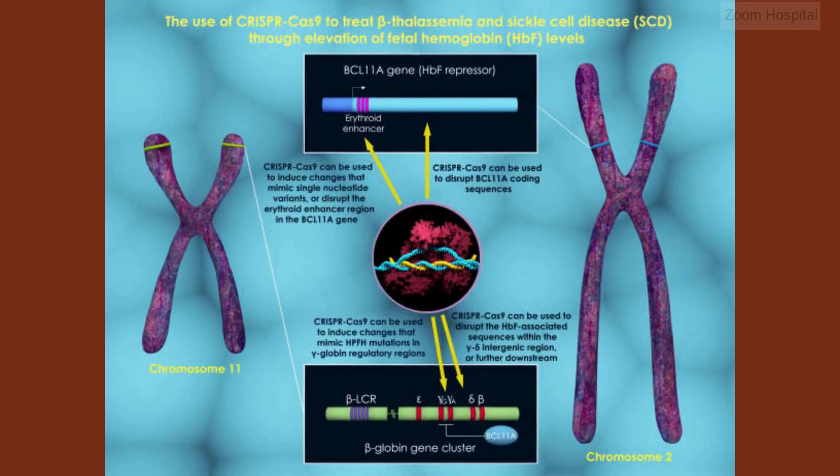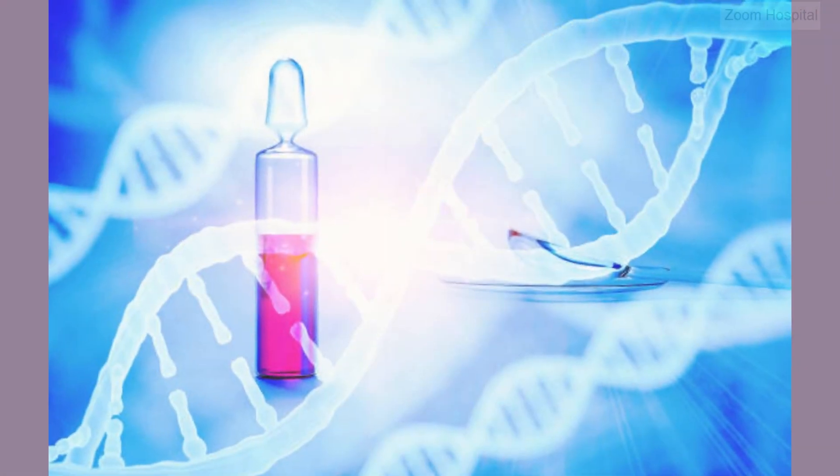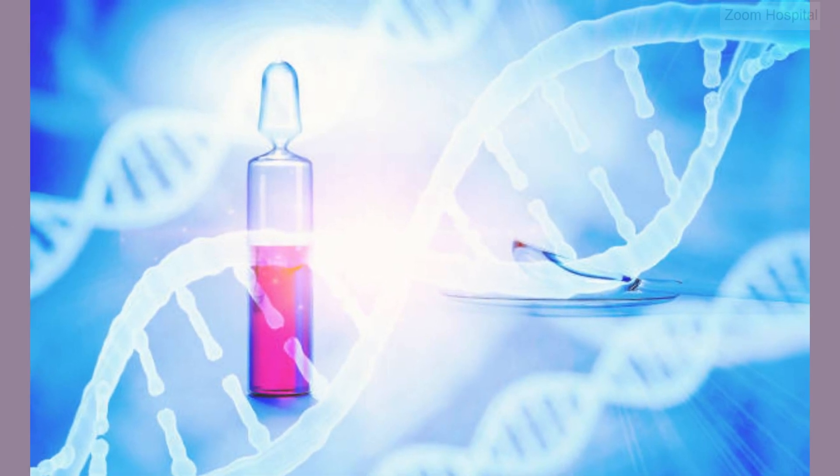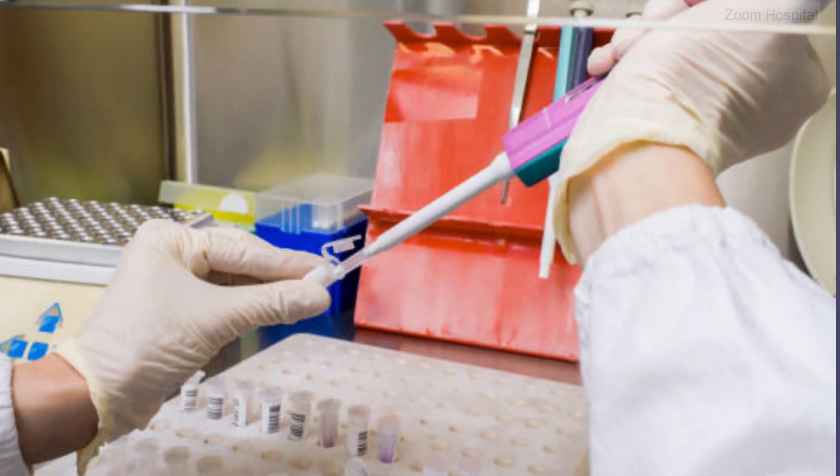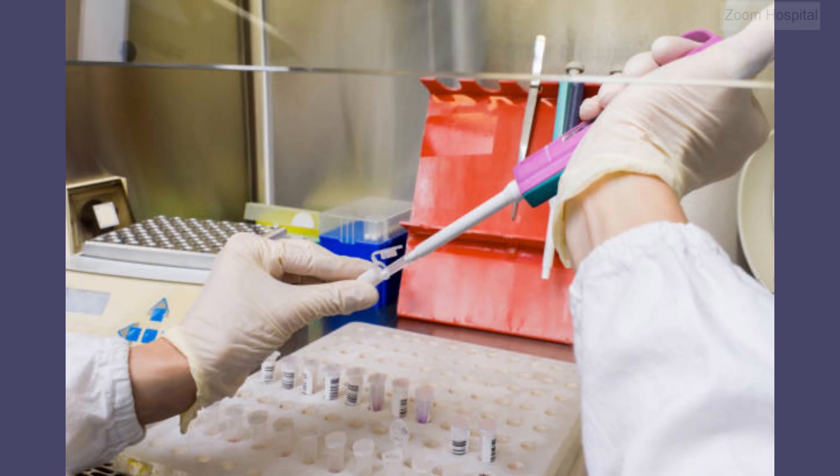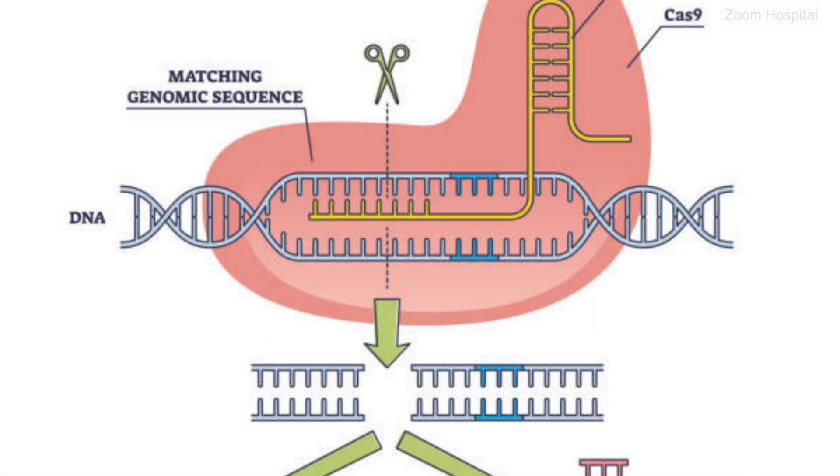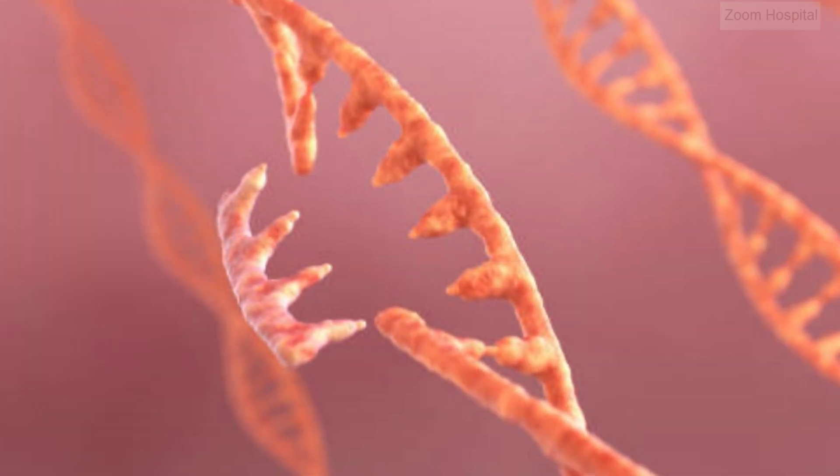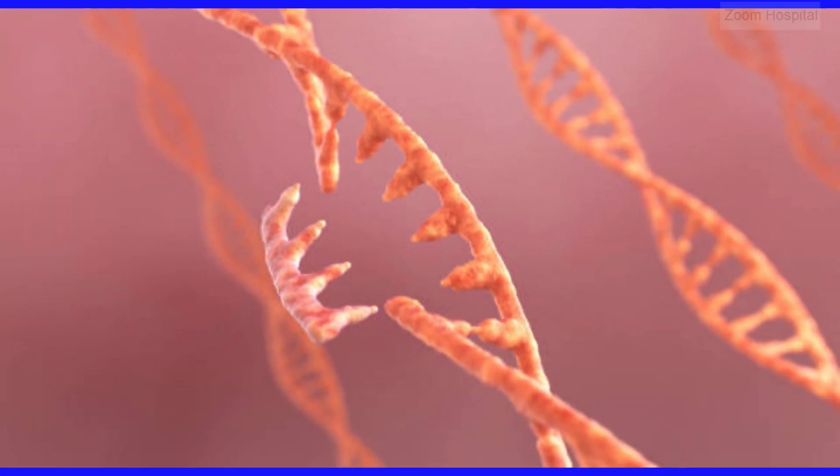Three: Introducing Cas9 into the cell. The Cas9 enzyme is then introduced into the cells along with the designed guide RNA. The Cas9 enzyme acts like molecular scissors that can cut the DNA at specific locations. It forms a complex with the guide RNA, creating a Cas9-guide RNA complex.